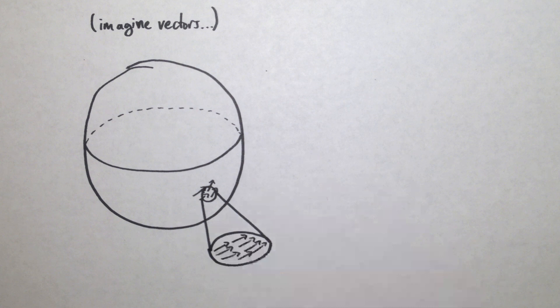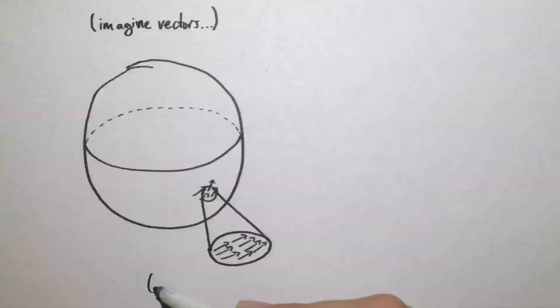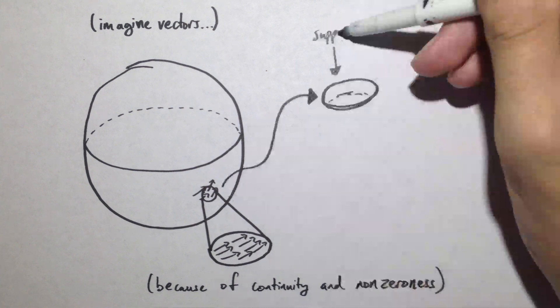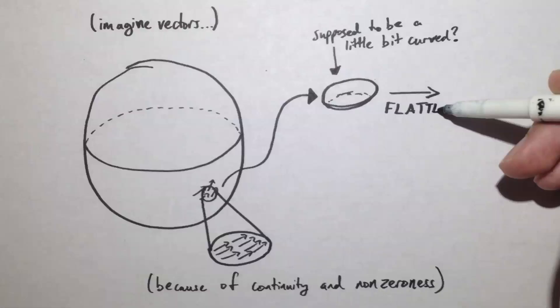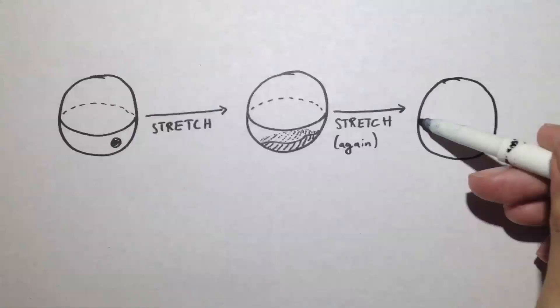We can then flatten this area into a disk, and as we just discussed, its winding number must be zero. Here's the tricky part. We're going to stretch that small circle out until it takes up an entire hemisphere, and then we're going to flatten both hemispheres into disks, one on top of the other.